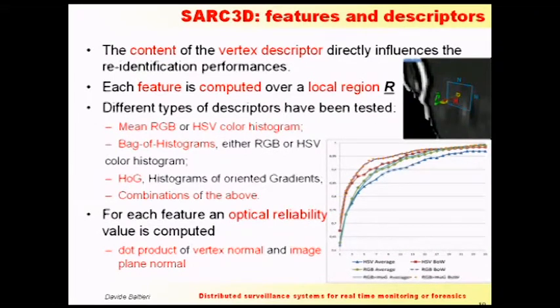For the features, I studied a lot of them — from mean colors to covariance matrices. In the end, the only ones that gave meaningful results were histograms, in particular color histograms. I tried different color spaces, one single color histogram per vertex or a bag of histograms per vertex, and histograms of oriented gradients and combinations of the above. After tests, I selected a color histogram in the RGB space in a bag-of-histograms system, because it outperforms all others.